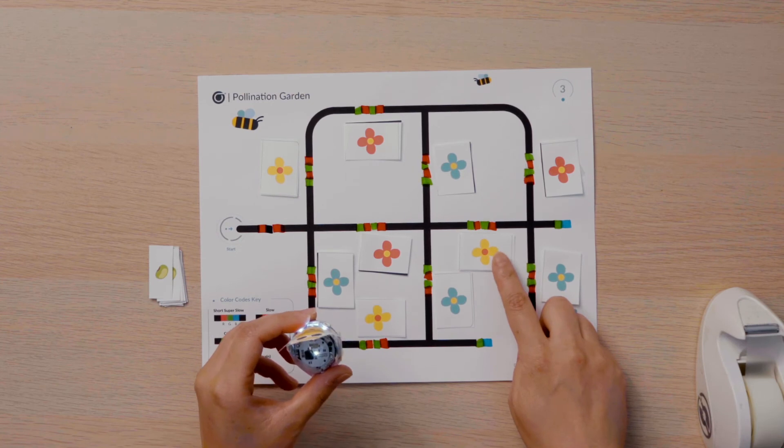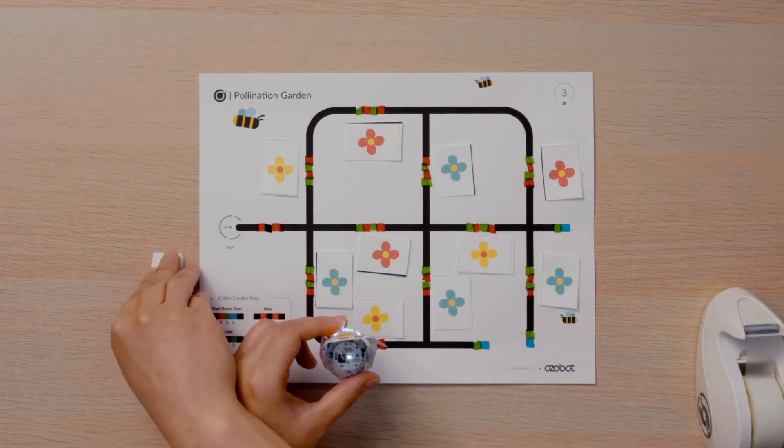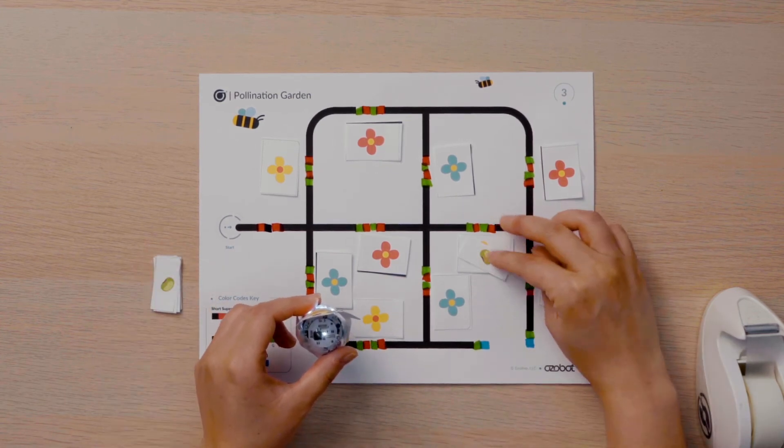Next, it moved to the yellow flower. I know it moved to this flower because it spun. At the second flower, a seed can be made, so I will put a seed on this flower.